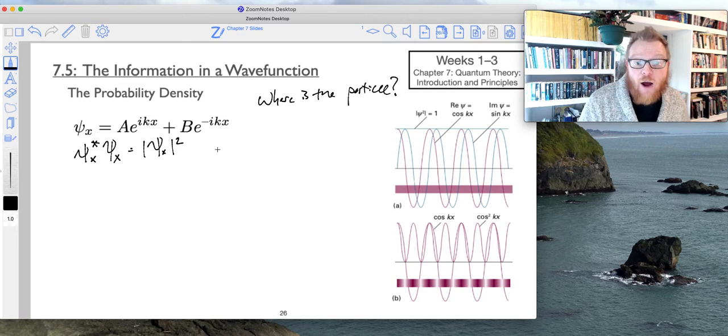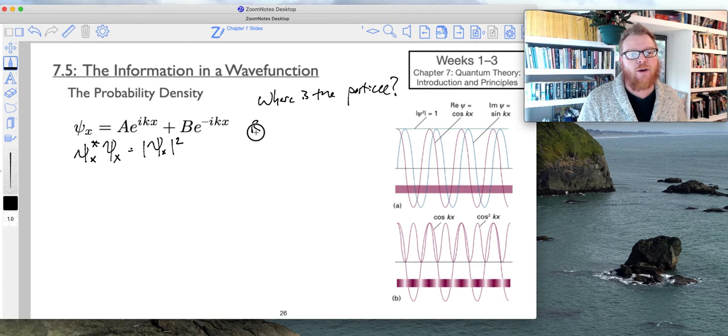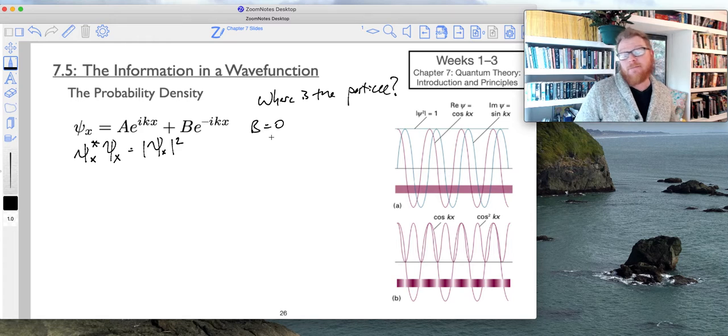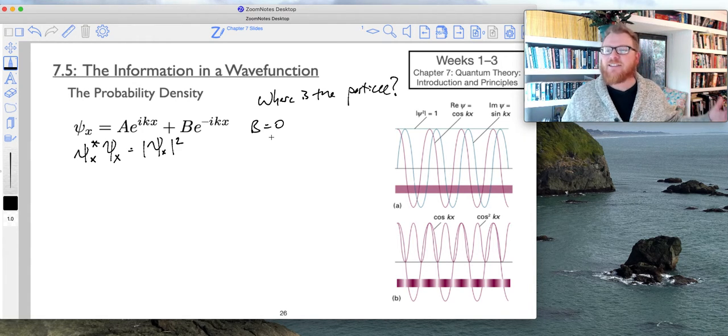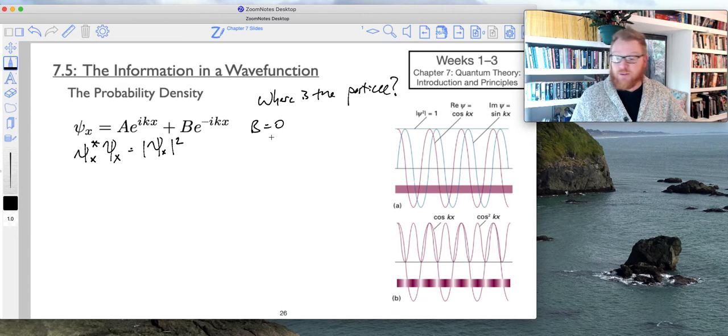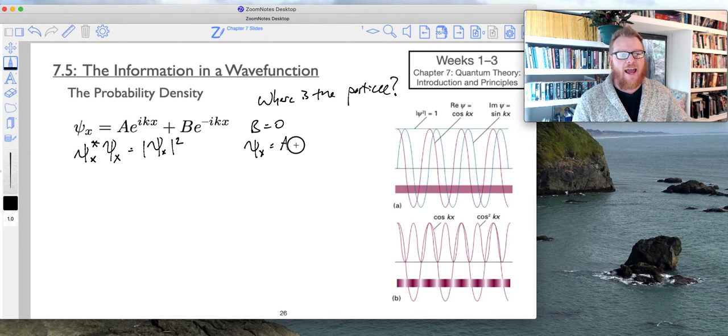And for now, just to make life easier, I'm going to play a game where we say, suppose b equals zero. So again, this isn't accurate, but it's going to give us a good means of getting used to this mathematics. So then if b equals zero, we can say psi x just equals a e to the i k x.